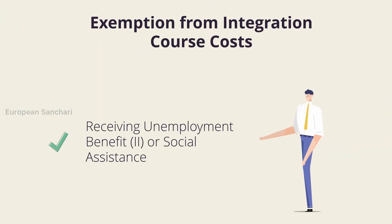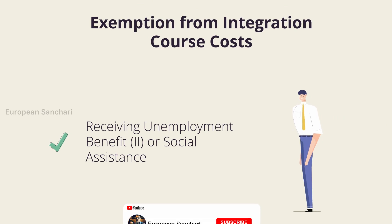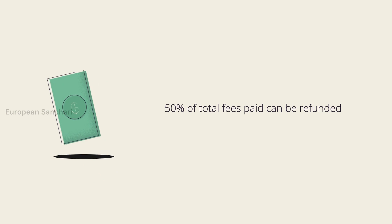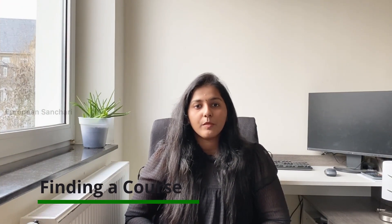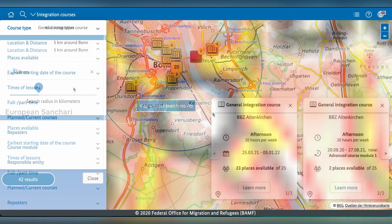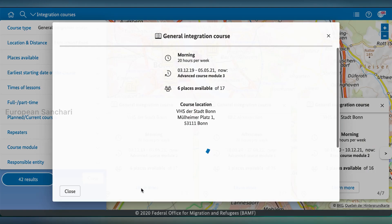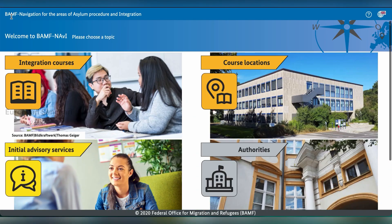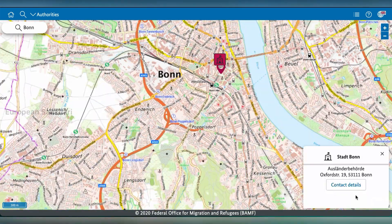There are exceptions — you can use unemployment benefits or other government aid to cover the cost. If you pass the exam, you may be able to reclaim part of the amount paid. You can find more information via a link in the description box. To find an integration course, you apply through the BAMF website, which has an interactive tool to find course offerings and locations near you. You can also apply through your local foreign office.